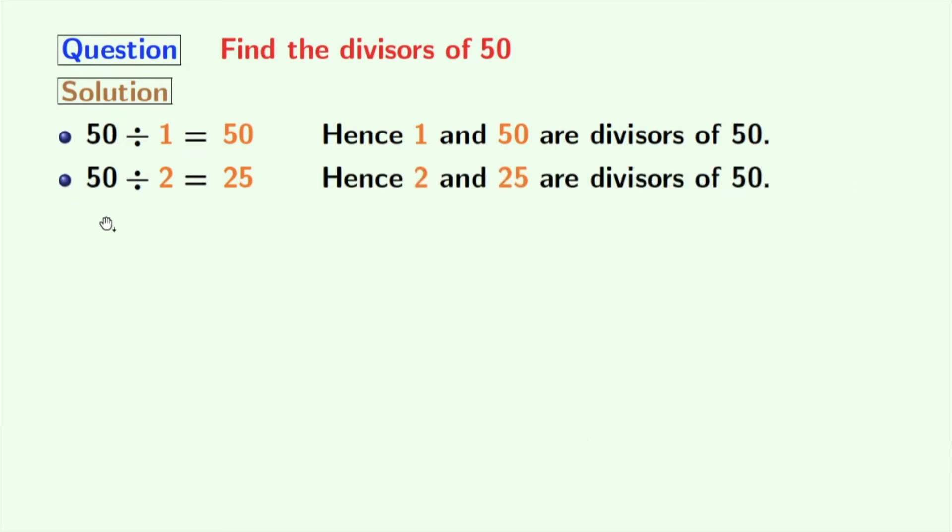Now if we try for 3 and 4, these two numbers do not divide 50. So we will try for 5. 50 divided by 5 gives us 10. Hence 5 and 10 are the divisors of 50.